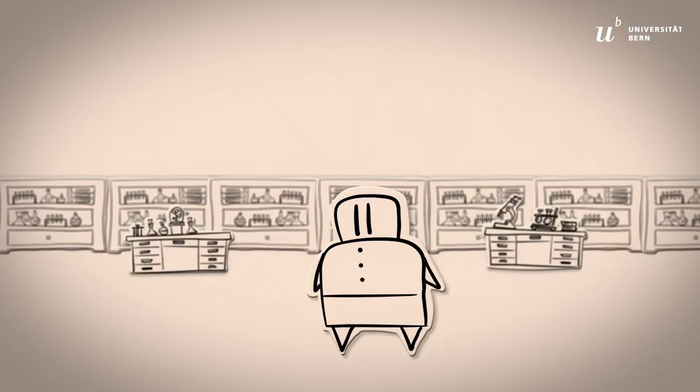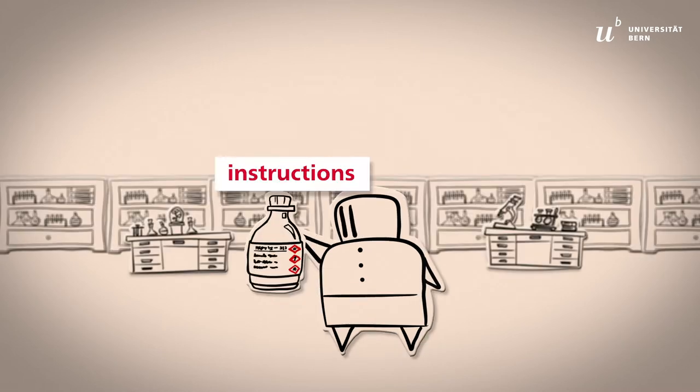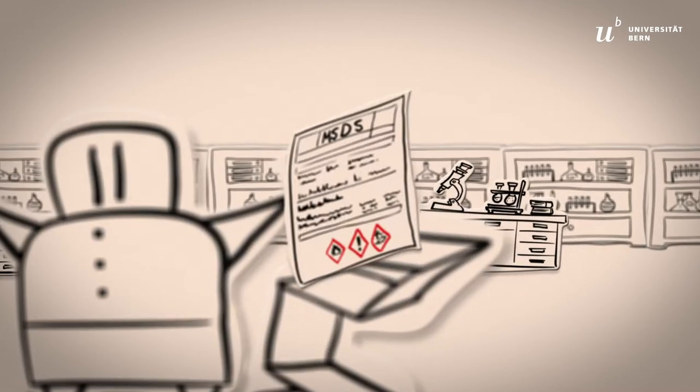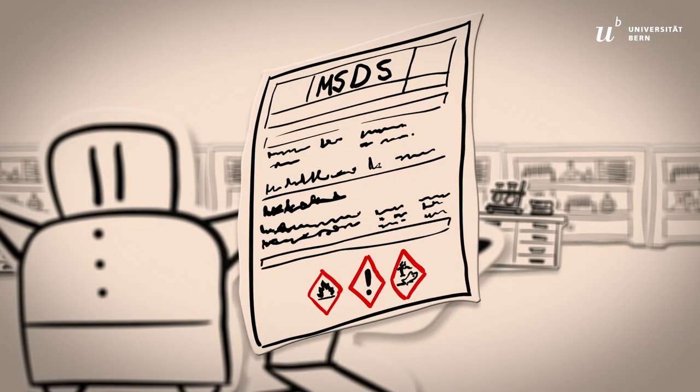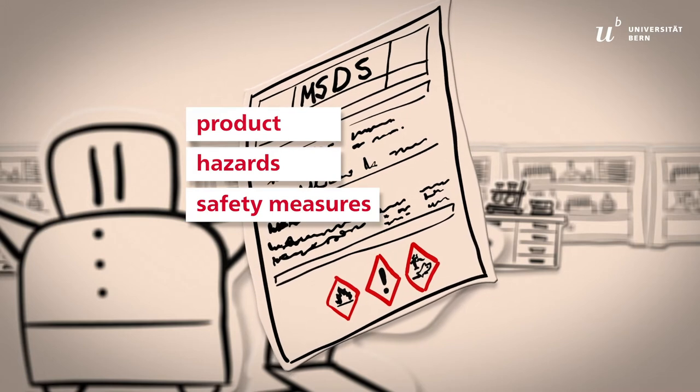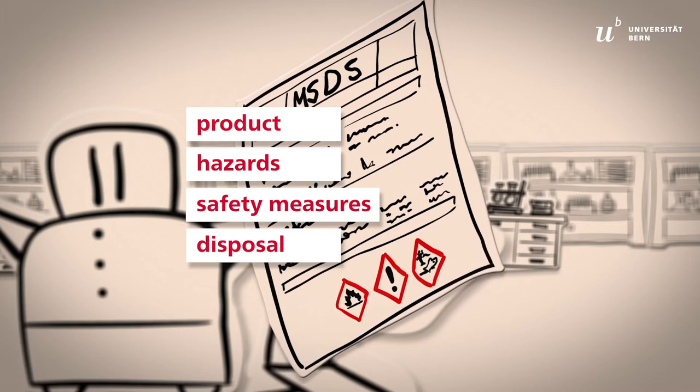To use a chemical in your work, you must follow the instructions given on the container label and the corresponding material safety data sheet. The sheet also contains information about the product, its hazards, the corresponding safety measures, and how to dispose of the product.